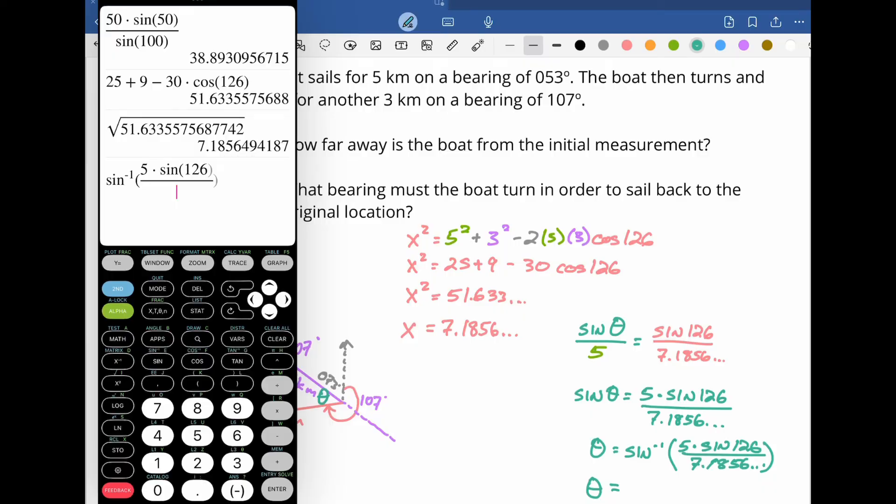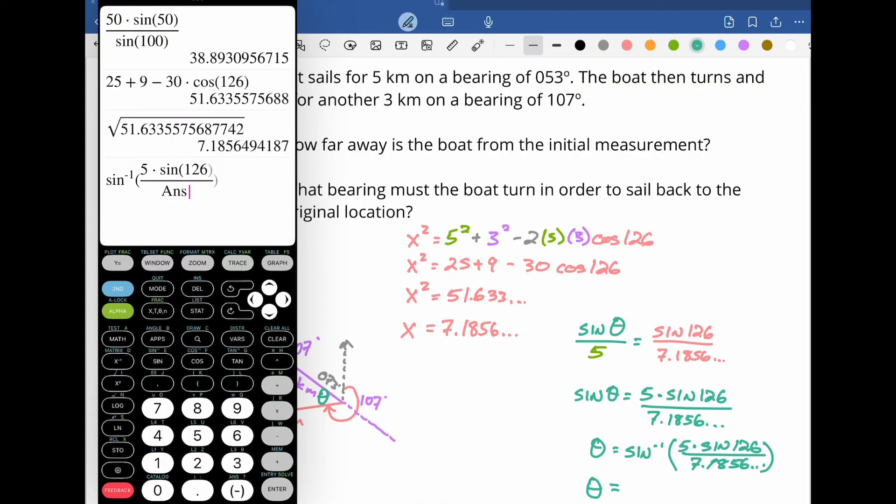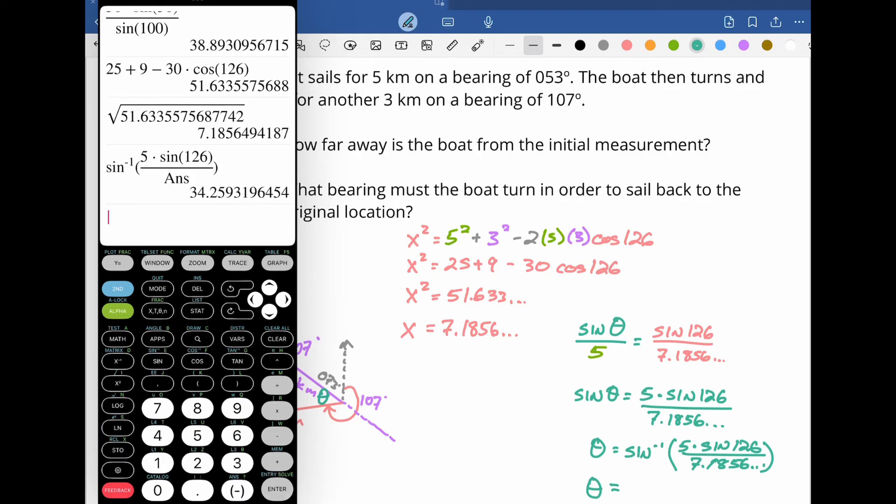And I'm going to hit second answer, which is the little negative sign at the bottom. And that's going to bring the answer from the previous line down into where I want it to be. And since that's my unrounded value for the 7.185, that's what I want. And when I hit enter, I get an angle measurement of 34.259, dot, dot, dot.